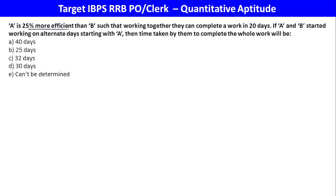A is 25% more efficient than B. Efficiency ratio of A to B is 5:4. Total work is 9 parts completed in 20 days. A and B work alternatively starting with A. On alternate days, they complete 5 units and 4 units, so 9 units in 2 days. Total work is 9 times 20 equals 180 units, requiring 2 times 20 equals 40 days. Option A is the final answer.